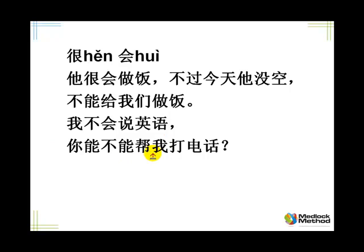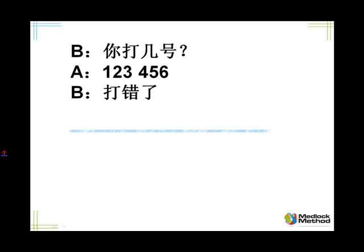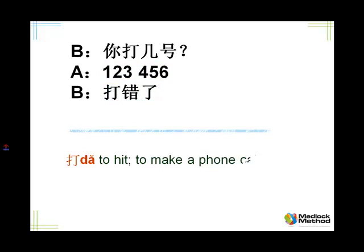Let's move on to the next slide. Listen please. 你打几号？ 一二三四五六。 打错了。 Here, 打 literally means to hit. And 打电话 — 你打几号？ You don't have to say 你打电话几号, just use 打 the verb. So you hit which numbers? 你打几号？ 一二三四五六，打错了 — that's the wrong number. So if you have the wrong number, you say 对不起，打错了.